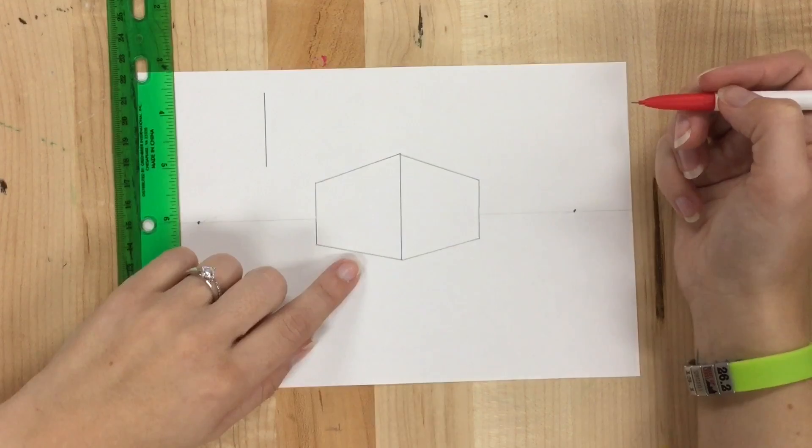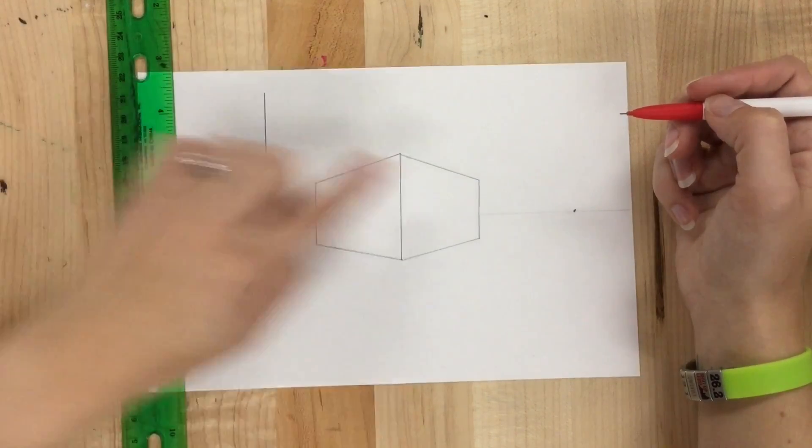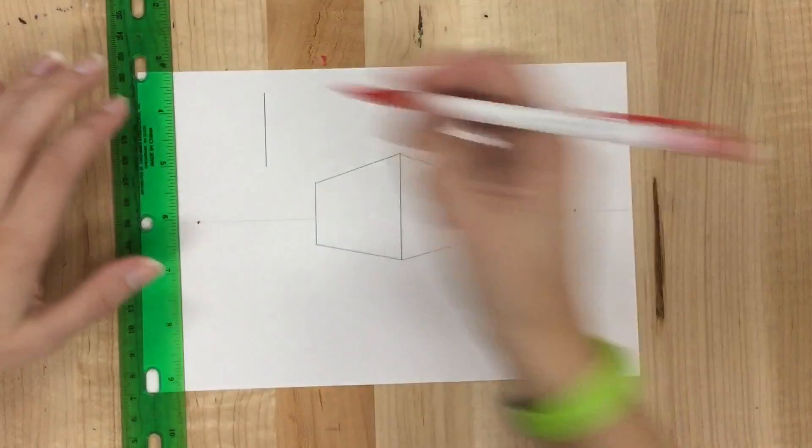My next step is the same as this box. I'm going to connect my end points of my corner to both vanishing points.